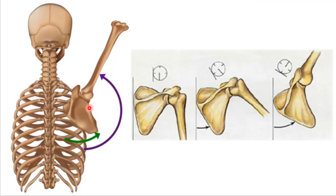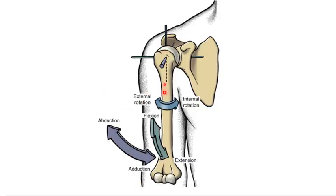You were asked to look at scapulohumeral rhythm, and we're going to talk about it here. Basically, for every degree of movement that the humerus makes, the scapula also follows suit to make sure it is maximally congruent between these two surfaces. Where the humerus goes, the scapula follows. So when we look at flexion, extension, abduction and adduction, it's not just the humerus moving — it's the humeral-scapular relationship that is moving.